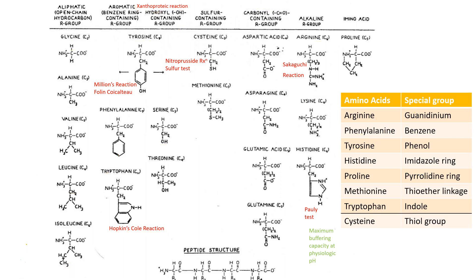Revising all the important special groups: arginine has the guanidinium group; phenylalanine has the benzene ring; tyrosine has the phenyl group; histidine has the five-membered imidazole ring, giving it maximum buffering capacity at physiologic pH; proline has the pyrrolidine ring and is an imino acid — its amino group is part of the pyrrolidine ring, making it the only amino acid with a secondary amino group; methionine has a thioether linkage; cysteine has a thiol group; tryptophan has the indole ring, making it positive for Hopkins-Cole reaction.